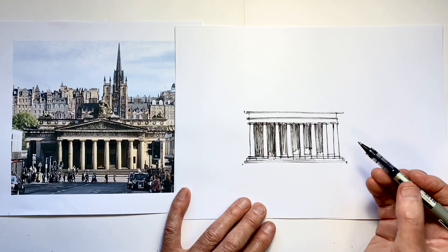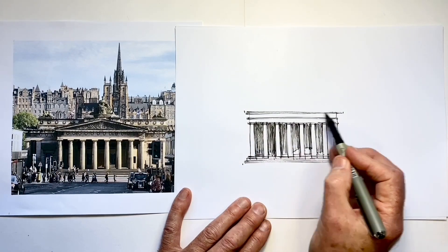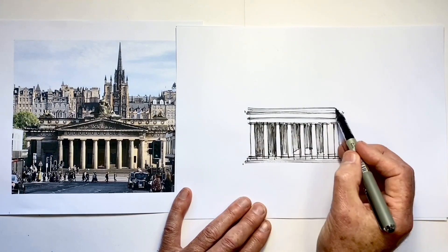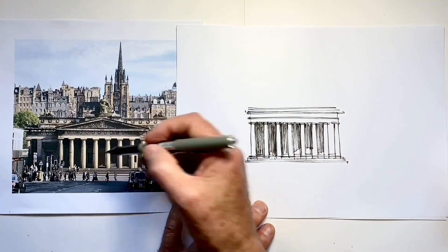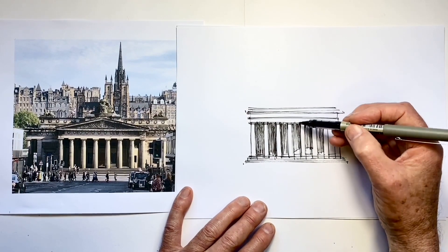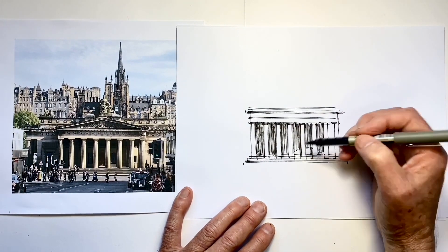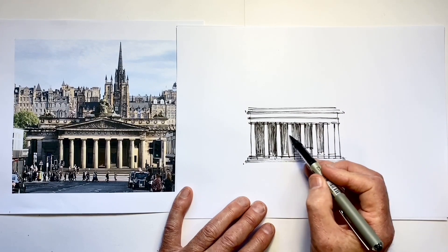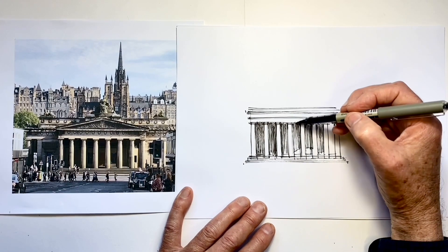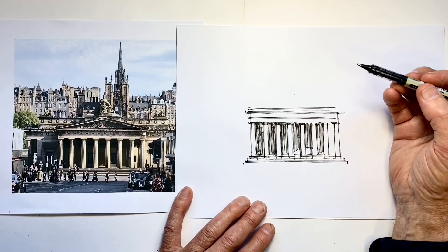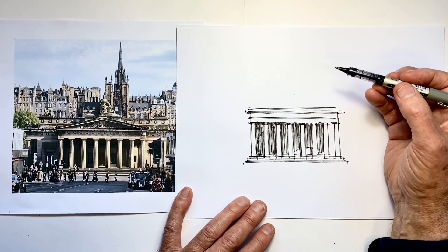Now in drawing the pediment, it's also a very important feature for the symmetry. What I need to do is make sure that the top of the pediment lines up with the center point between the two central columns and I like to actually put that dot in place.